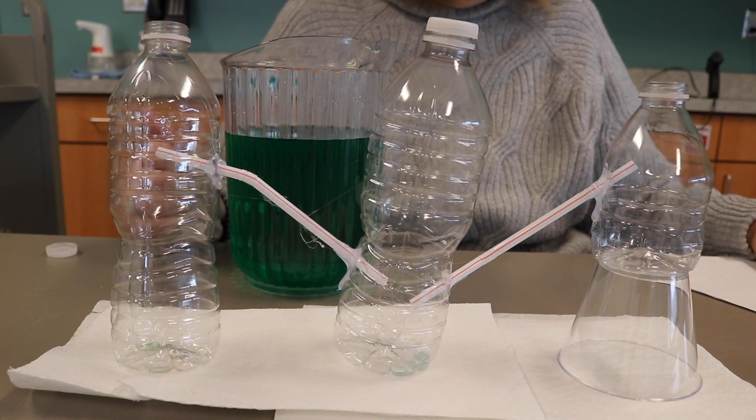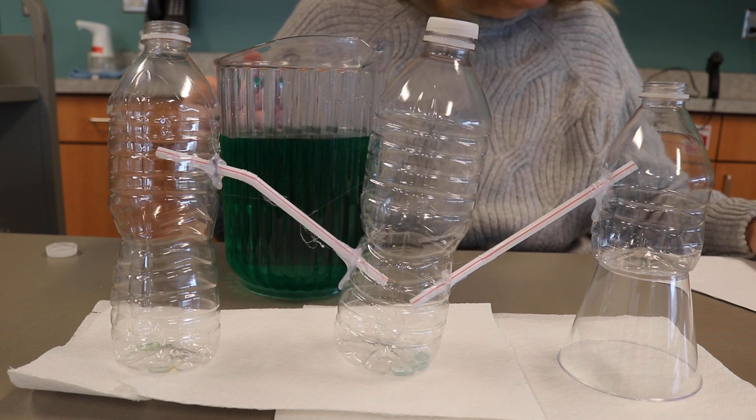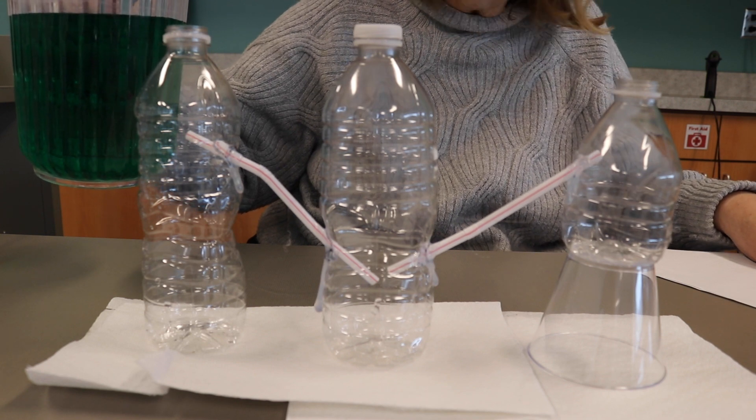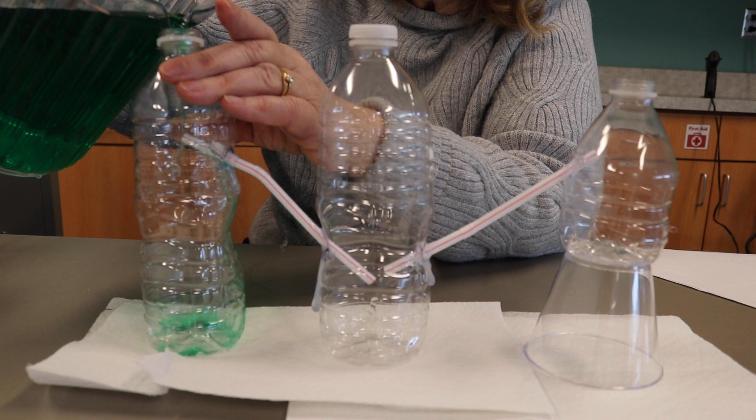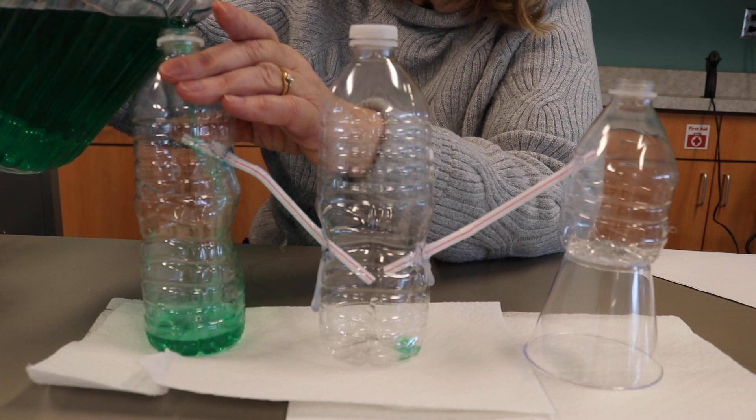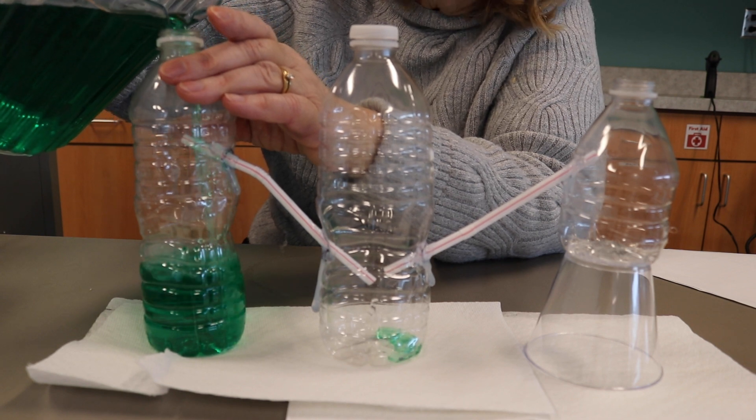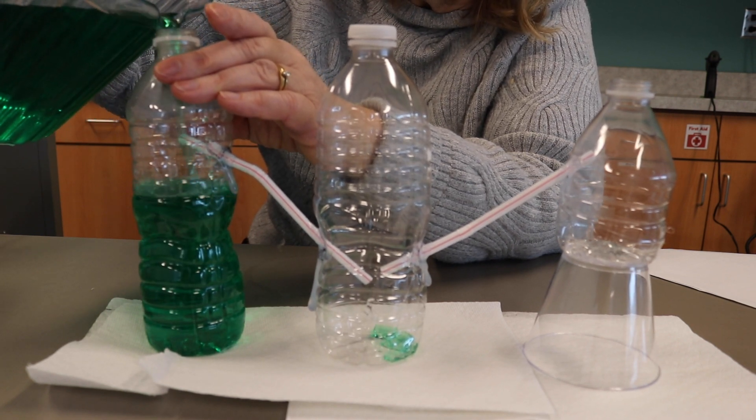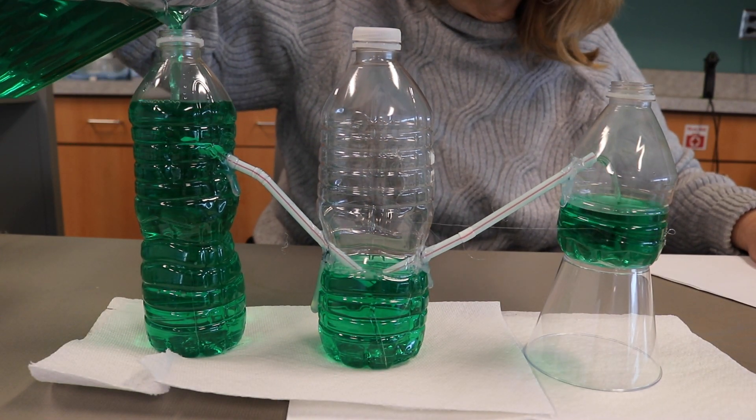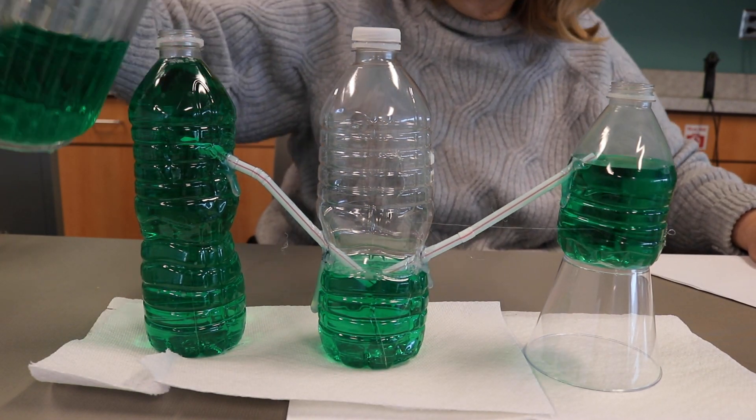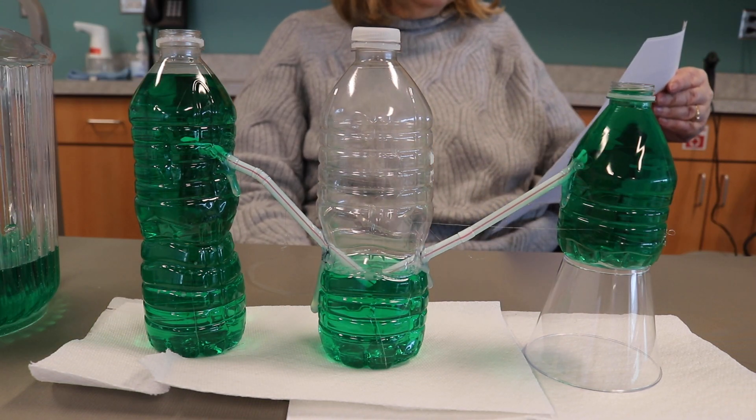We're ready to add water. I filled my water pitcher with water and added some green food coloring. Now pour water into the tall side bottle. You're going to fill all the way up when it fills the middle bottle. Slowly keep adding water until the small bottle is filled. Now all three bottles are filled.